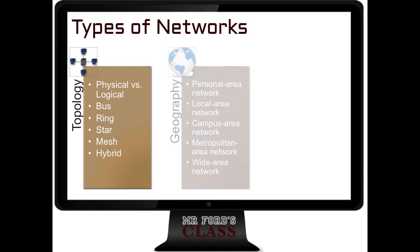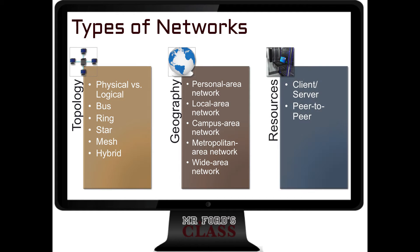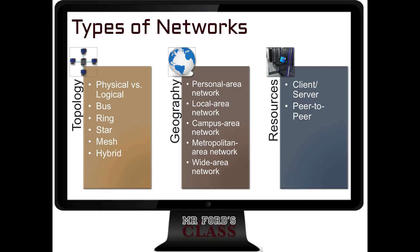We can then classify things based on geography — where are they physically located and what's their distance from each other? We have something called a personal area network or PAN, a local area network or LAN, a campus area network or CAN, a metropolitan area network or MAN, and a wide area network or WAN. We can also classify networks based on how they deal with their resources. We have a client-server classification, where a client requests information from another computer, and we can also have something called peer-to-peer, where computers are equal and share resources accordingly.